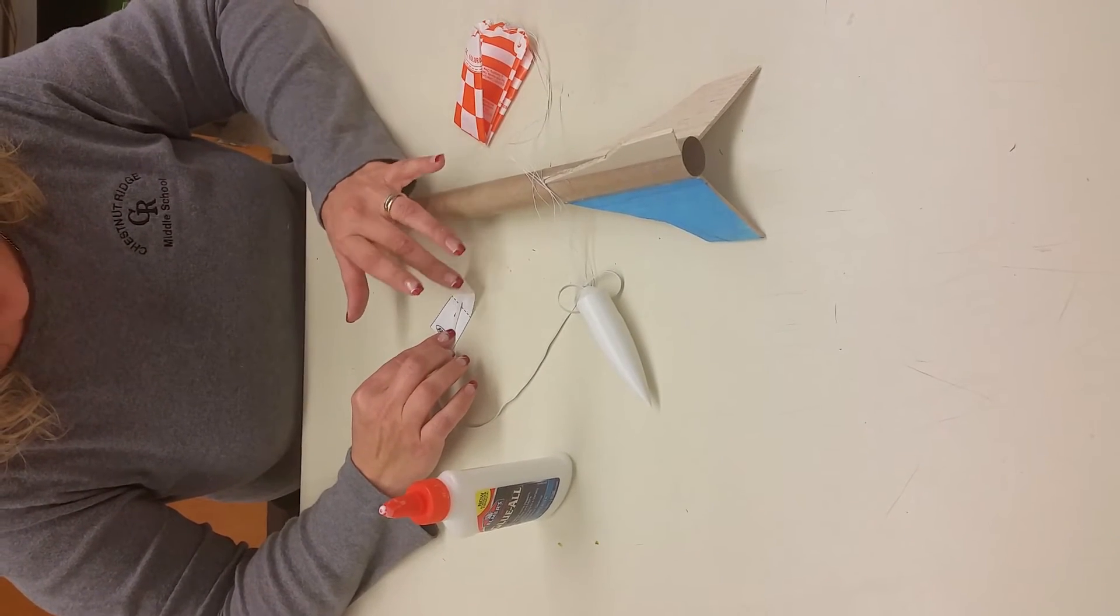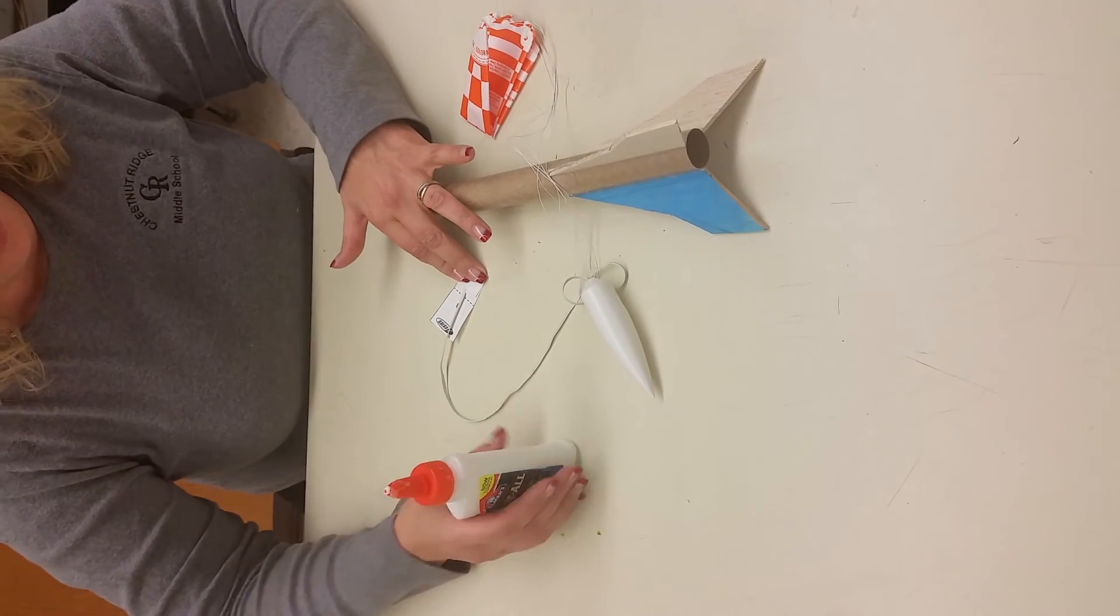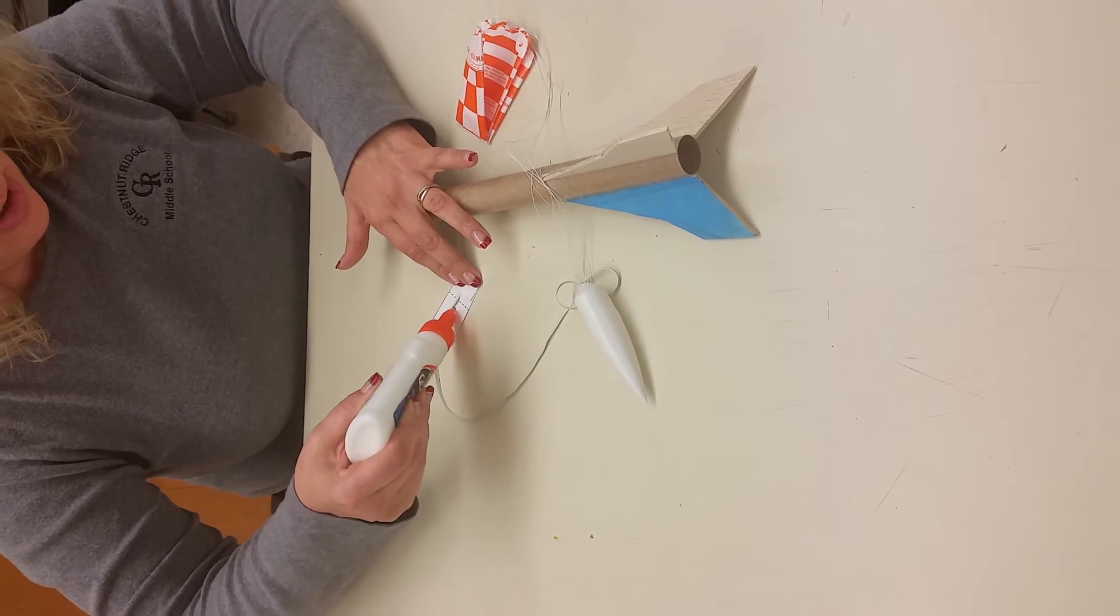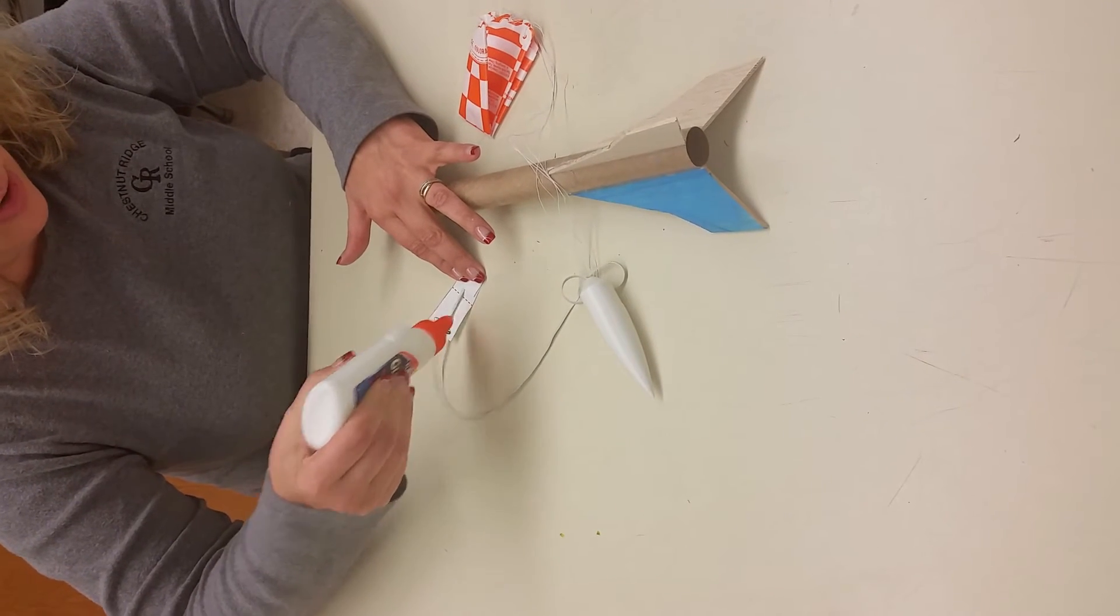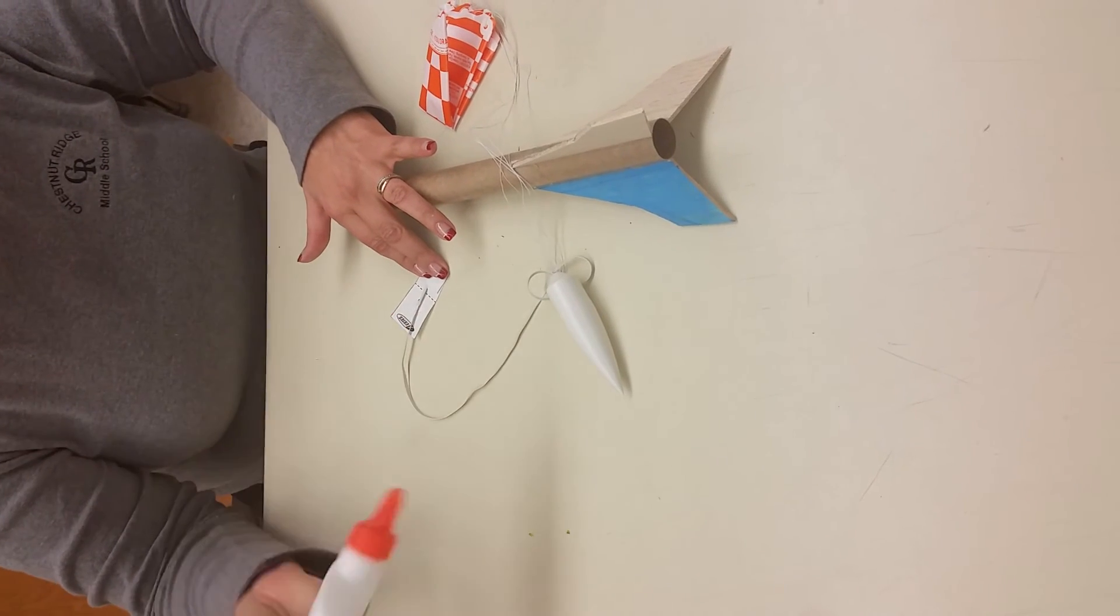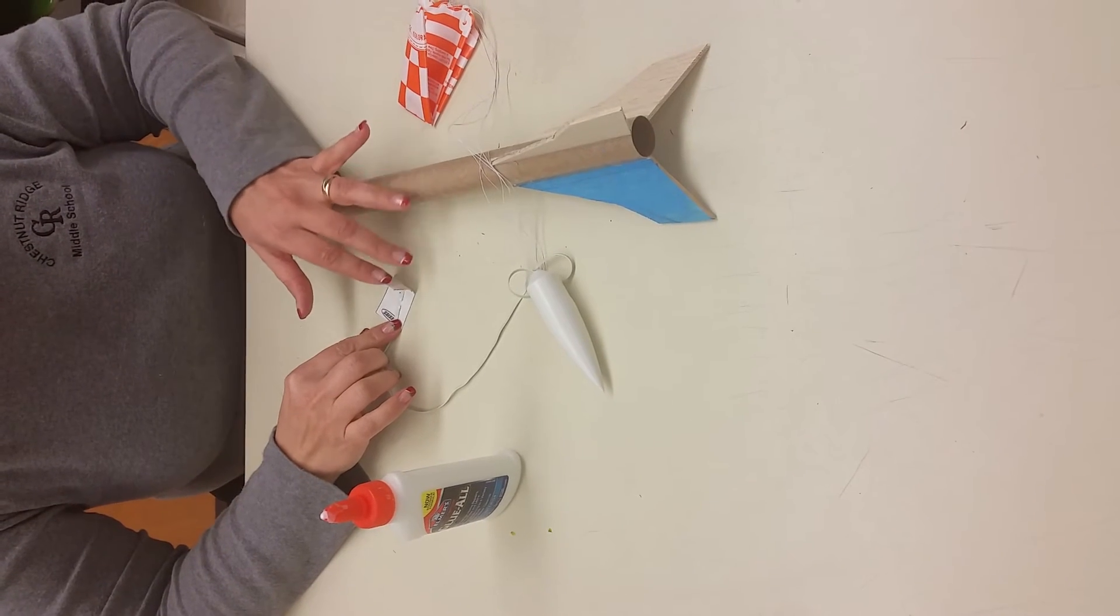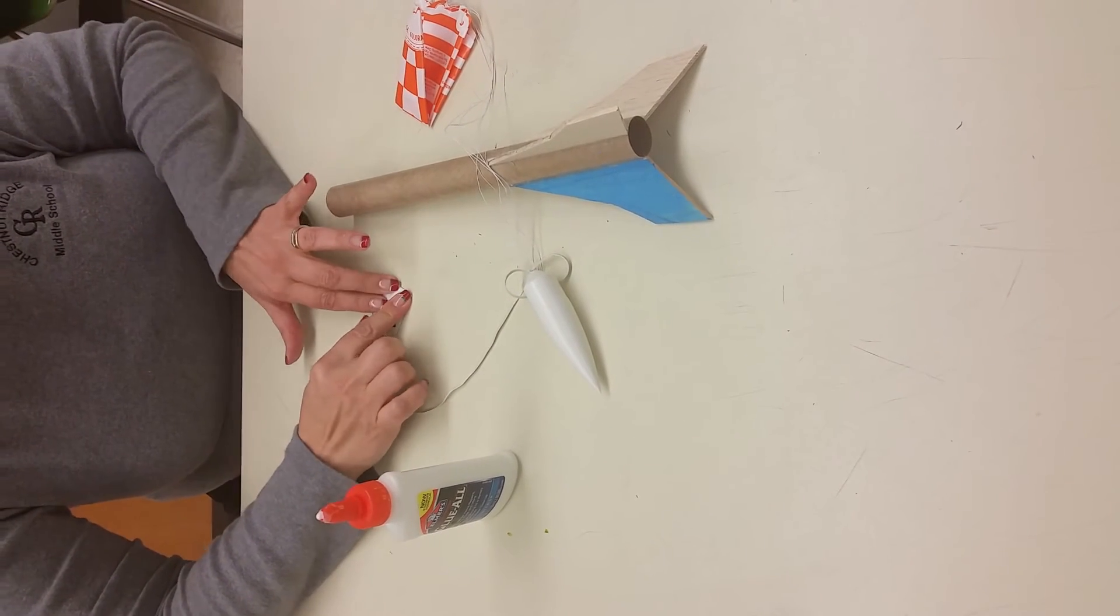Then you're going to fold one down on top of two. Then you're going to put a little bit of glue under and over your shock cord on section three. Now you don't need a whole lot of glue because it will spread out. Then you're going to fold one and two down on top of three.